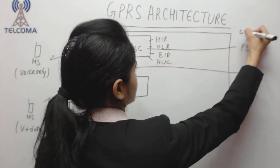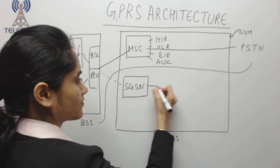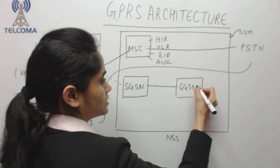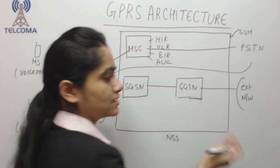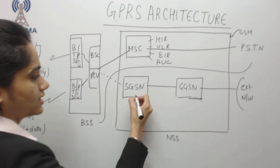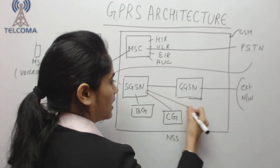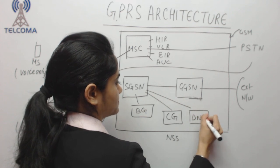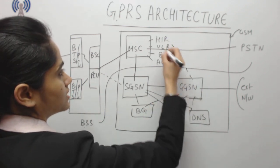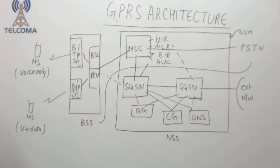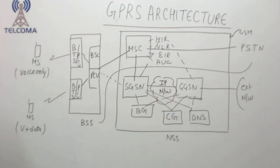This architecture describes GSM for voice processing. For GPRS data processing, we add SGSN and GGSN. The GGSN is attached to the external network and external databases through a border gateway. We also have a charging gateway, a DNS as domain name service, and SGSN is connected to HLR for location. This forms a complete IP-based network.